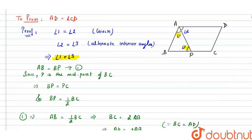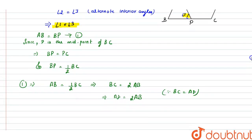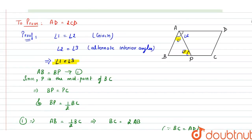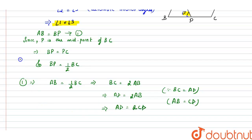Now let us see what we have to prove: AD is equal to twice of CD. As we know, AB is equal to CD — these are also opposite sides of the parallelogram. Therefore, we can write AD is equal to twice of CD. This is exactly what we had to prove.